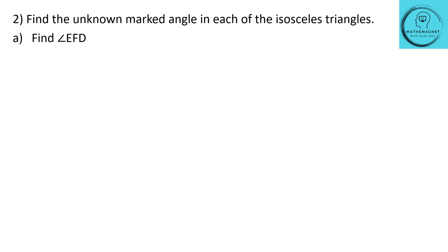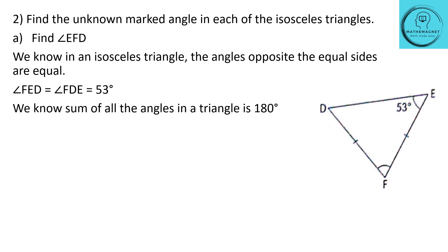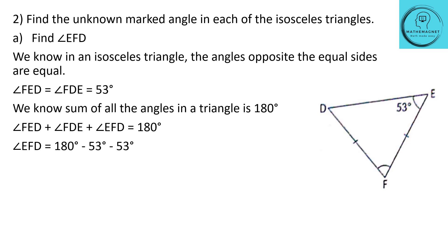Let's look at the second question: find the unknown marked angle in each of the isosceles triangles. Find angle EFD in the given triangle DEF. This is an isosceles triangle, meaning two sides are equal. The angles opposite the equal sides are equal, so angle E equals angle D. Therefore angle FED equals angle EDF, which is 53 degrees. To find the third angle: angle EFD equals 180 minus 53 minus 53, which is 74 degrees. The unknown angle EFD is equal to 74 degrees.